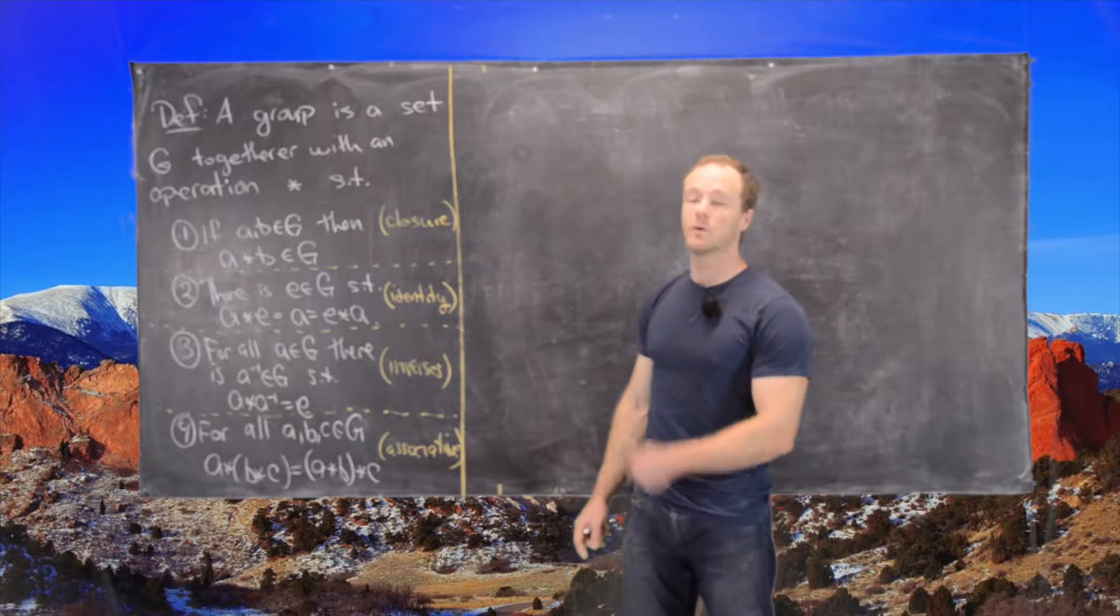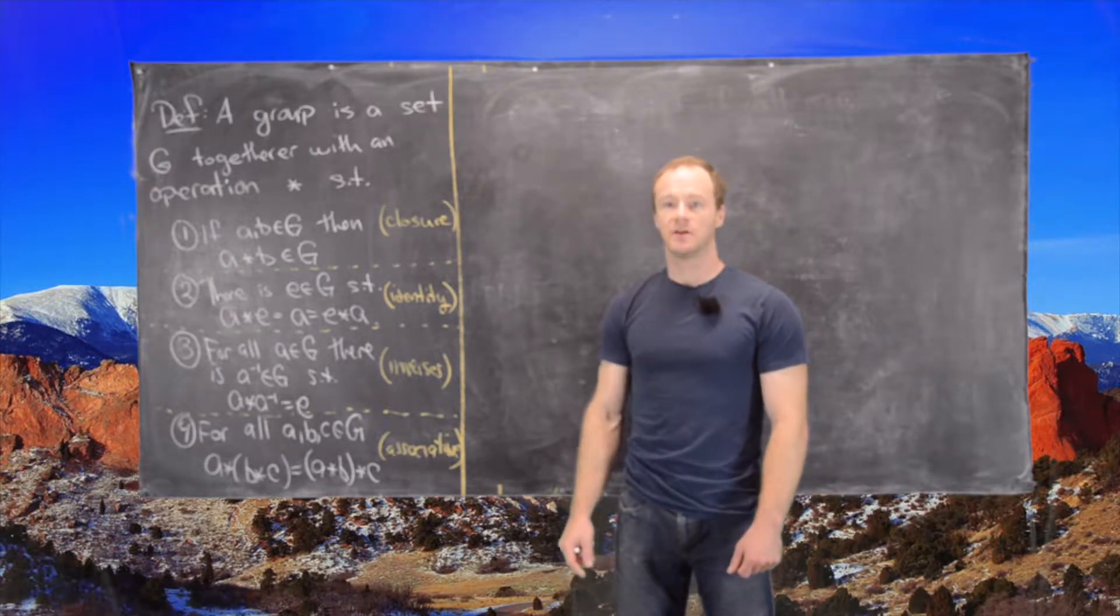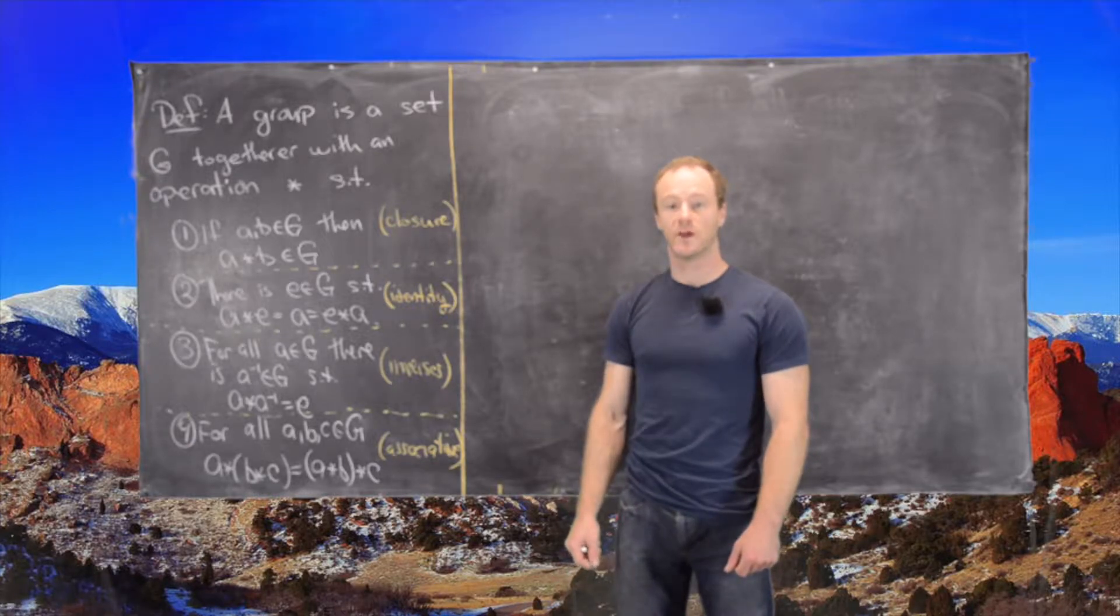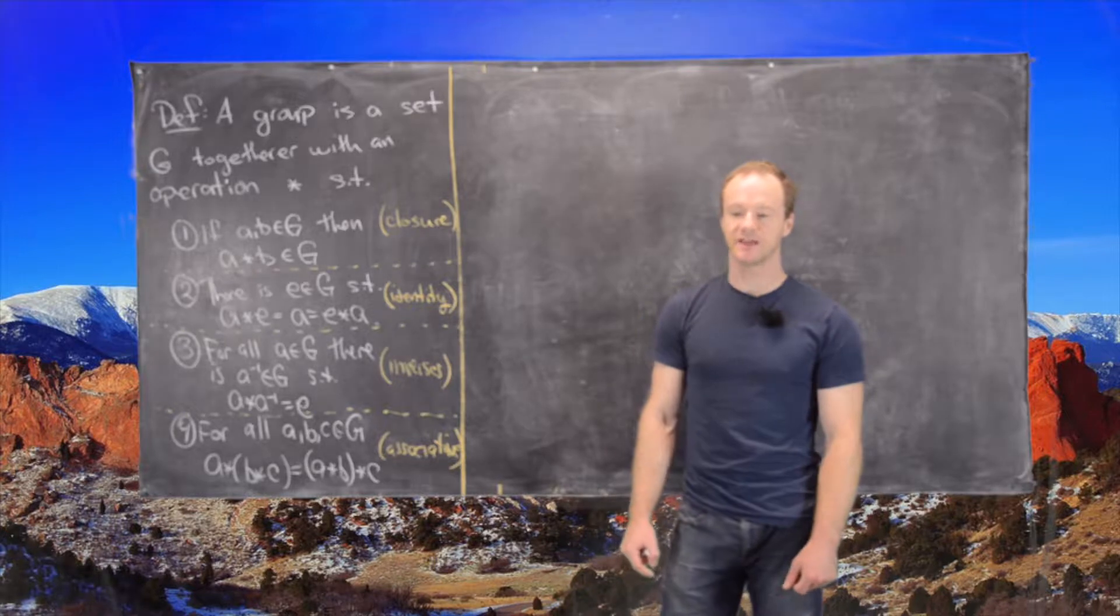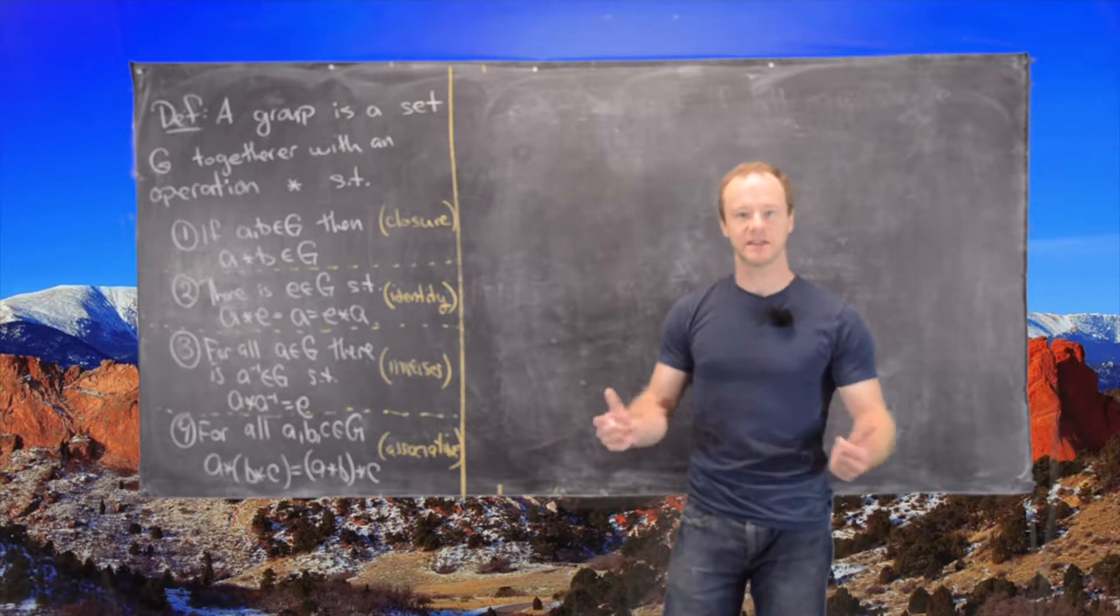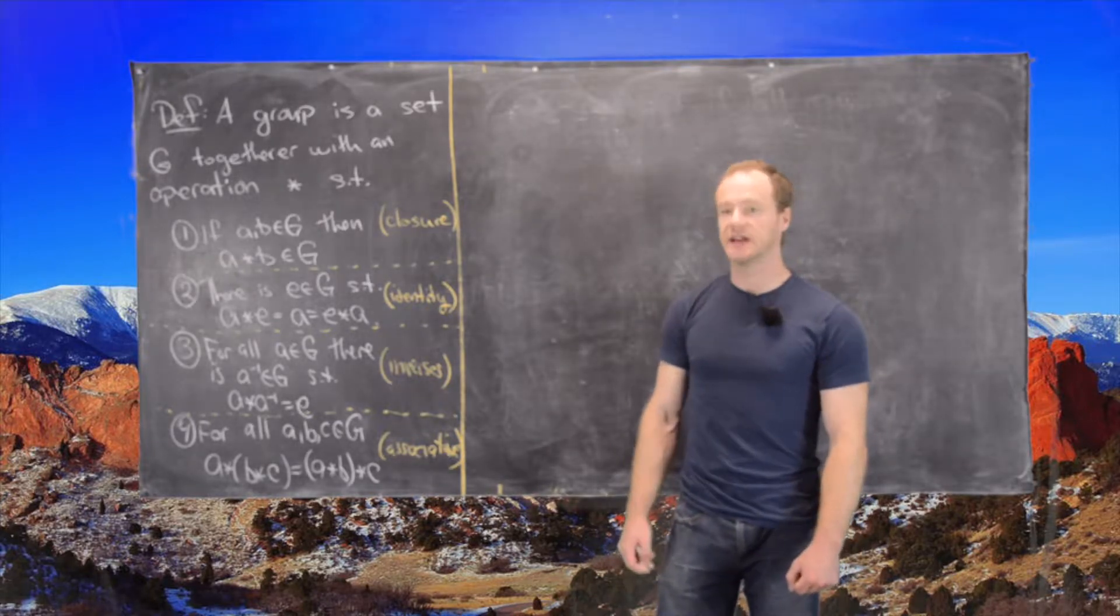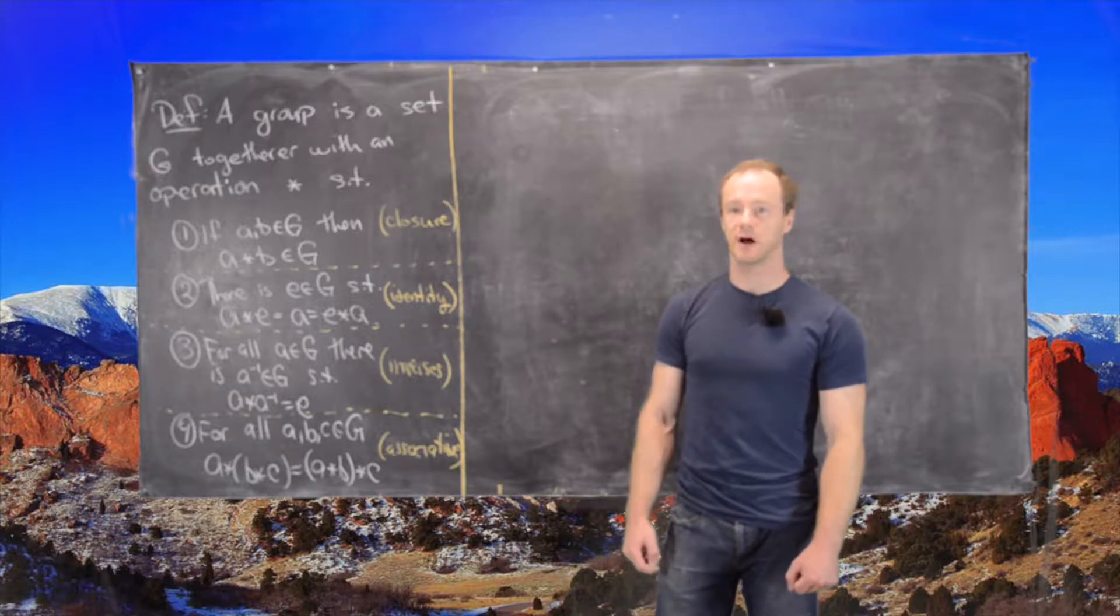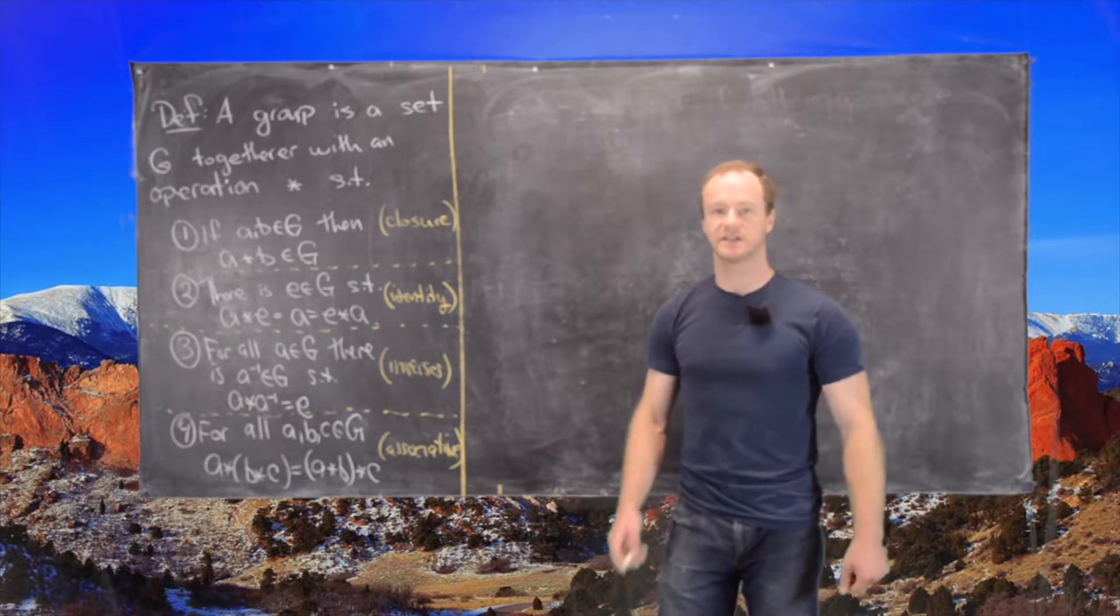We also looked in that video at some examples of groups, including the group Zn with addition. We gave some evidence that Zn with multiplication is not a group, but perhaps we could tweak it by deleting some members in order to get a group. In fact we can do that and it's called the group of units modulo n. That's what I want to define here and then we'll look at some examples.